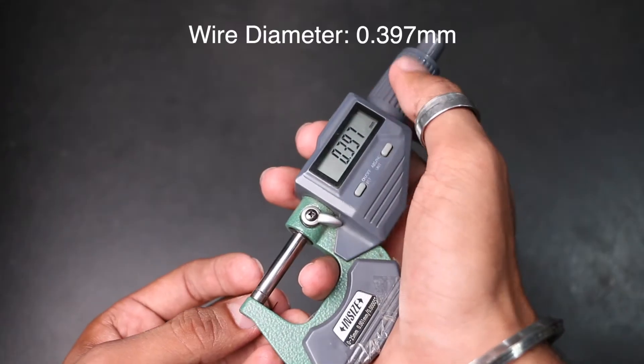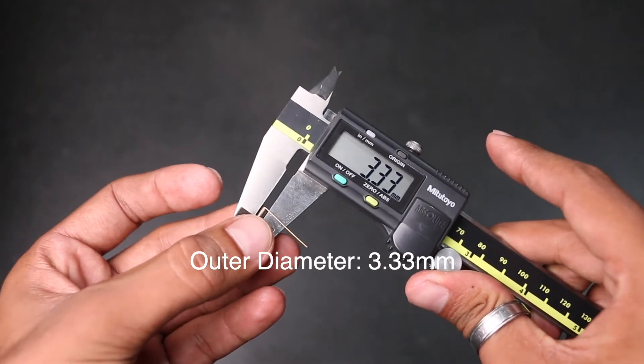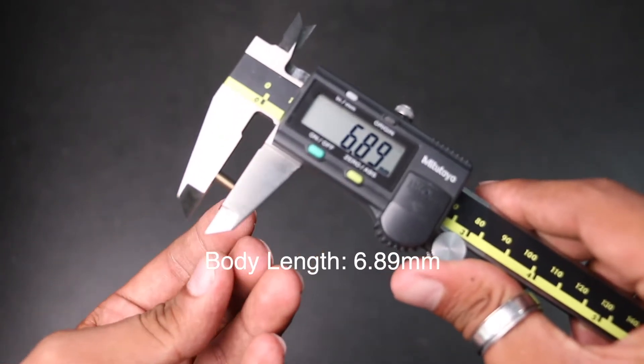The wire diameter of this spring is 0.397 millimeters. OD, that is outer diameter, is 3.33 millimeters. Body length is 6.89 millimeters.